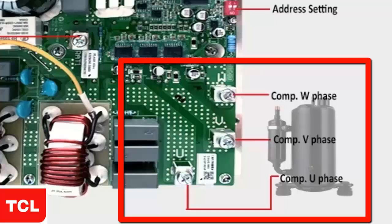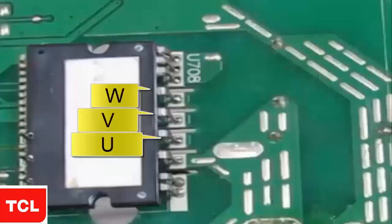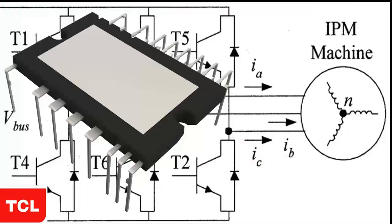Set the multimeter to the diode scale. The IPM electronic circuit is internally composed of six IGBT transistors, each containing a diode that we will test. Let's start with the integrity test of the first three diodes.